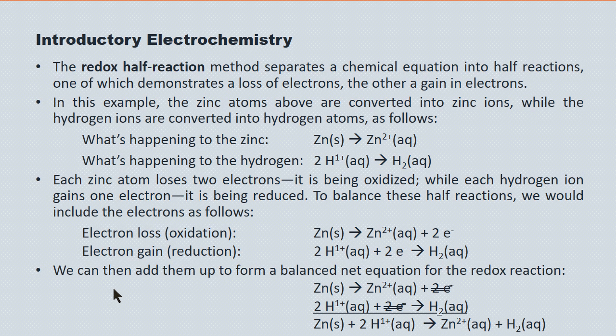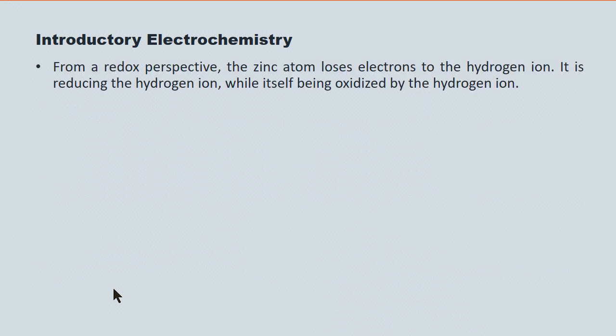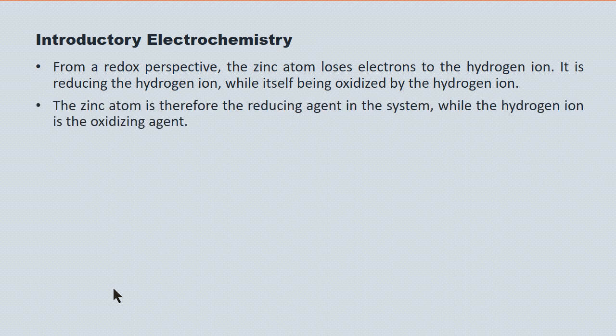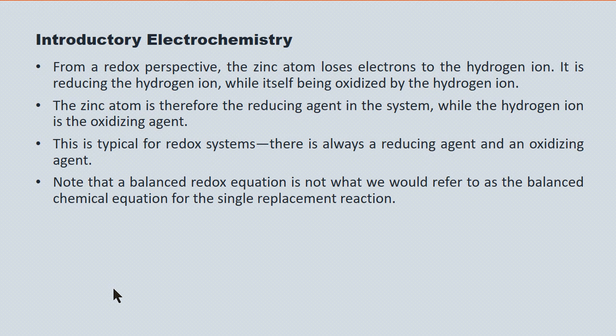This balanced redox equation is very different from the single replacement reaction we started with. In this and all examples, spectator ions are eliminated. From a redox perspective, the zinc atom loses electrons to the hydrogen ion — it is reducing the hydrogen ion while itself being oxidized by the hydrogen ion. This makes the zinc atom the reducing agent and the hydrogen ion the oxidizing agent. There's always an oxidation paired with a reduction, and always a reducing agent paired with an oxidizing agent. This is typical for all redox reactions. The balanced redox equation focuses on the movement of electrons and disposes of any spectator species.